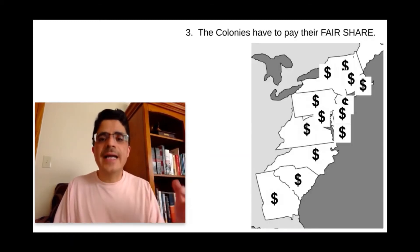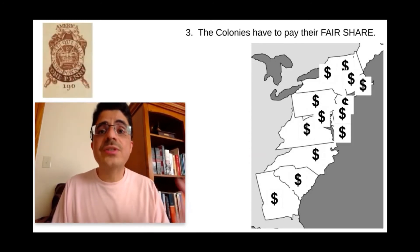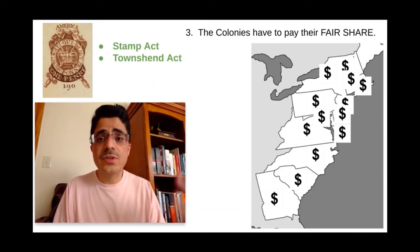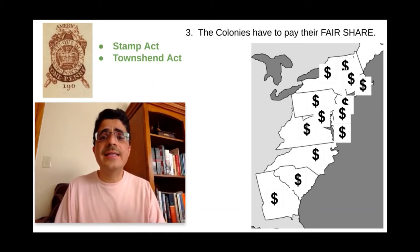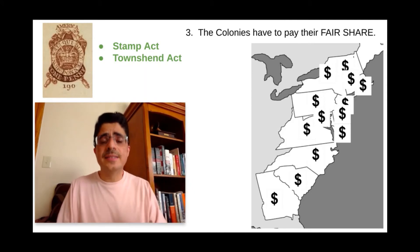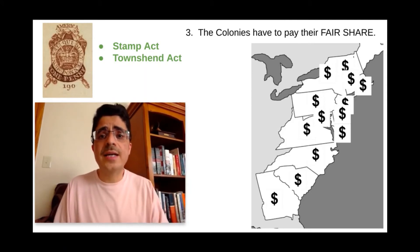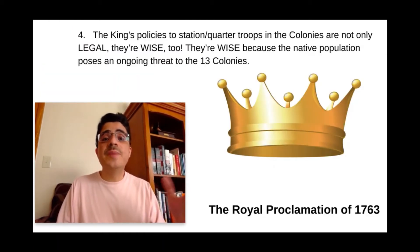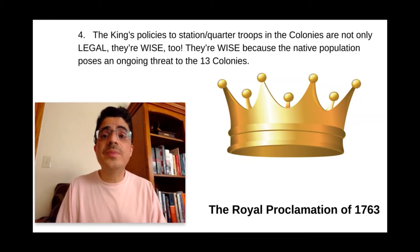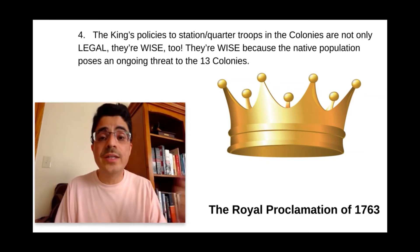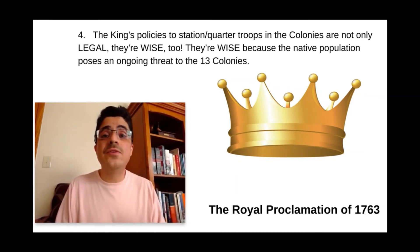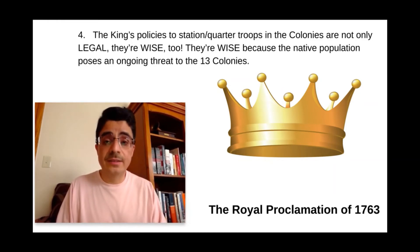Number three, the colonies have to pay their fair share. And of course this came out through the Stamp Act, the Townshend Acts — the taxes levied on the 13 colonies. John Lind's argument is: you have to contribute to your own defense. Number four, the king's policy to station and quarter troops in the colonies is not only legal but also wise. It's wise because the native population poses an ongoing threat to the 13 colonies, and therefore the king must still keep troops on the ground because of the realities on the ground.